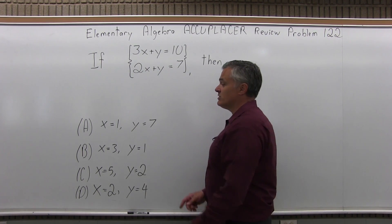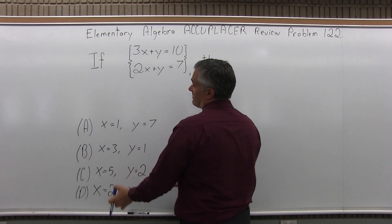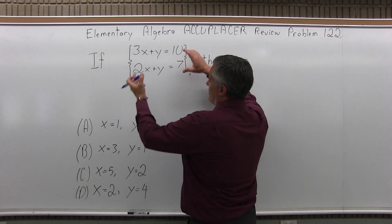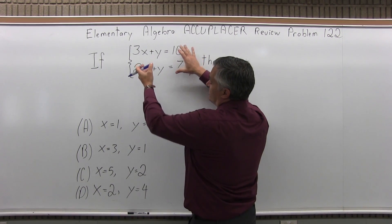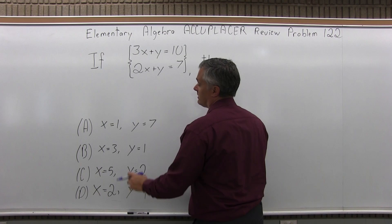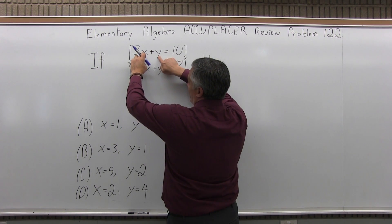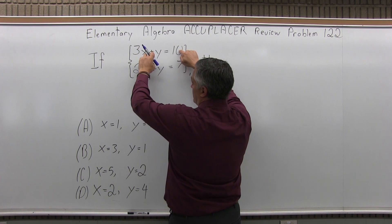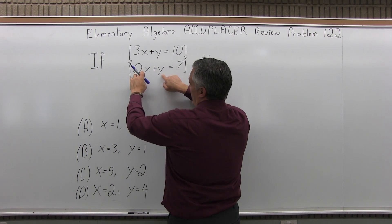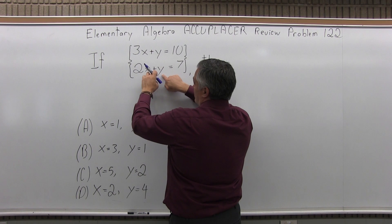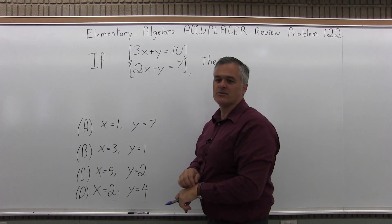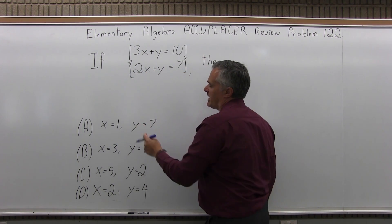There's a couple of ways you can do this. You can just put in the values of x and y that are given for each option and see which one will make both equations true at the same time, and only one of them will. So if x is 1 and y is 7, you'll have 3 plus 7, 10 equals 10, that's good. The second equation, x is 1, y is 7, so you have 2 plus 7, you get 9 equals 7. That's not true, so it can't be A.